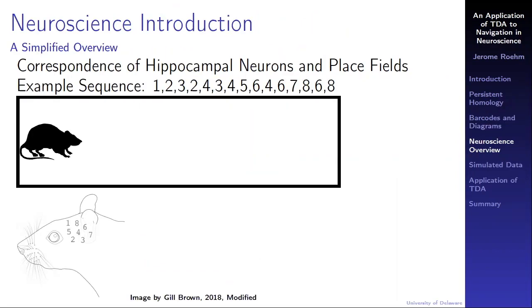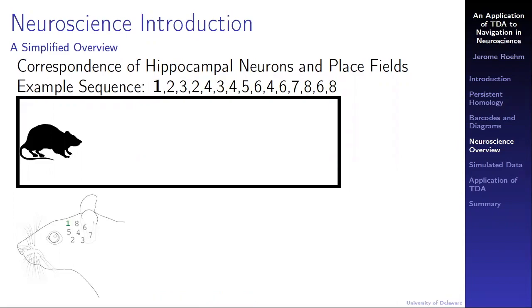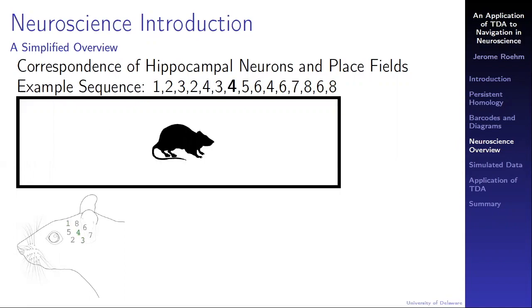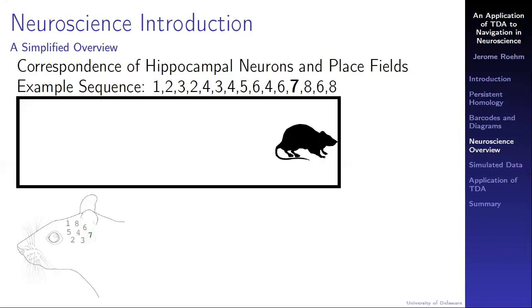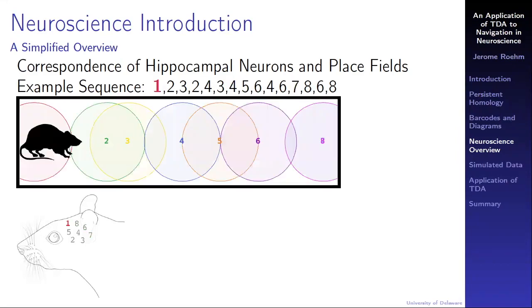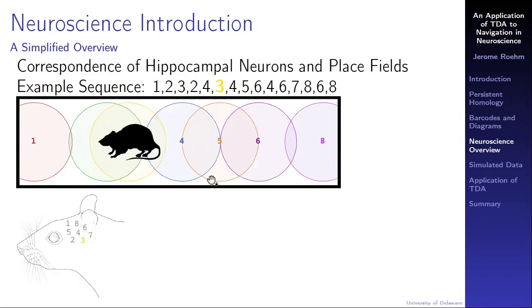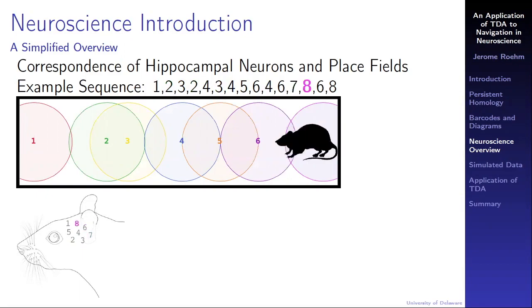Now that we are familiar with the mathematical concepts, I'd like to give you an introduction to some neuroscience. This will just be a simplified overview. As the rat moves down a one-dimensional track, certain neurons in the rat's brain fire at an increased rate. If we know where the rat is, we can track these neural firings and develop a map, a correspondence between the neurons in the rat's brain, called place cells, and the physical locations in the space, called place fields. When an animal is in a specific place field, the corresponding place cell will fire at an increased rate.